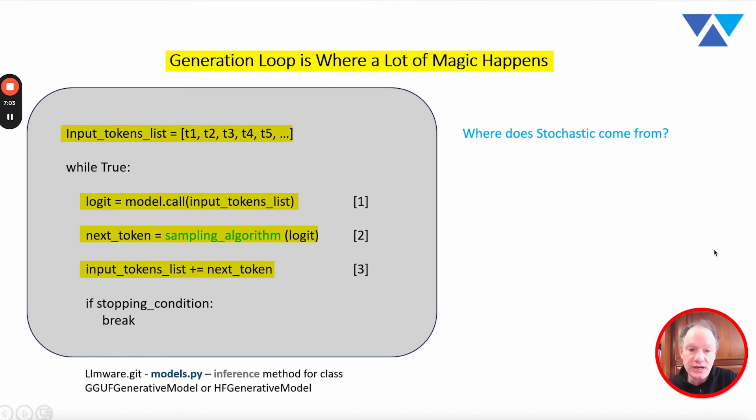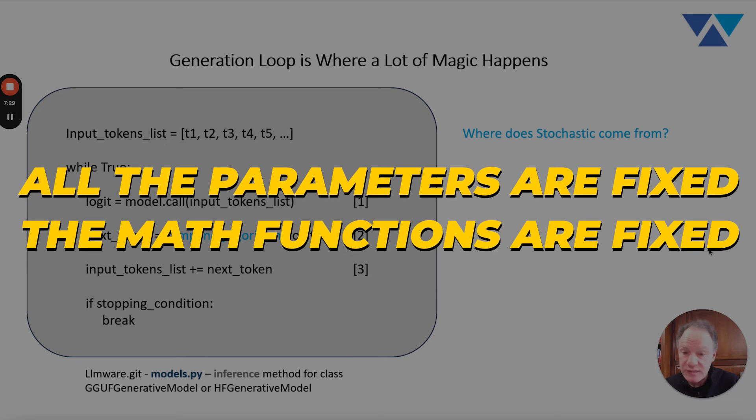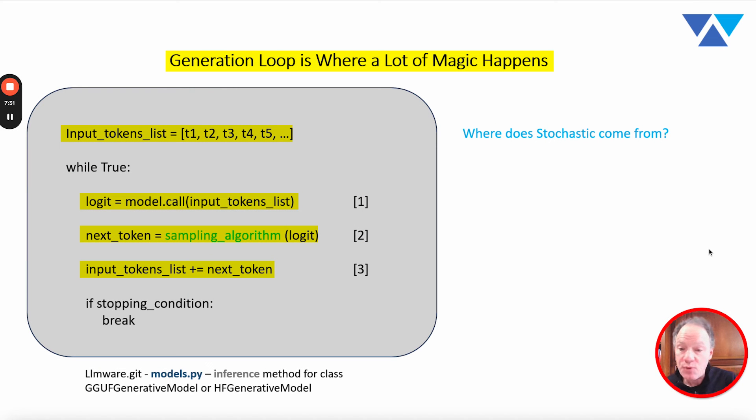So now the key question comes to, what is stochastic in this process? Where does the random stuff come into this? Well, it largely is not in step one or step three. Now again, a mathematician may quibble with us, and they may have a deeper insight into this that we don't have. But largely speaking, the model, when called in a forward pass, when it's not in a training cycle, all the parameters are fixed, the math functions are fixed, and it is largely a deterministic process. Given the exact same input, the same set of input tokens, generally speaking, it is going to produce the exact same output.